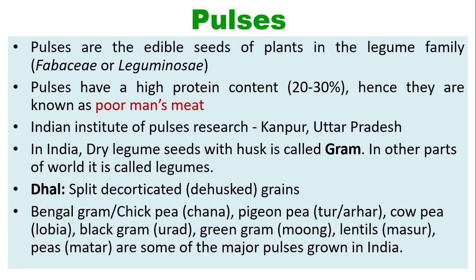The Indian Institute of Pulses Research is situated at Kanpur, Uttar Pradesh, India. Dry legume seeds with husk are called gram in India, but in other parts of the world they are called legumes. Split, decorticated or dehusked grains are known as dal.